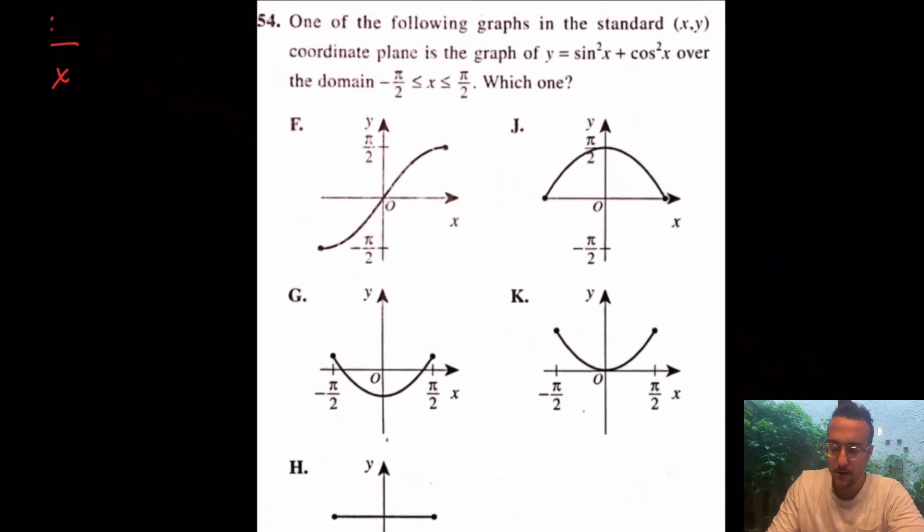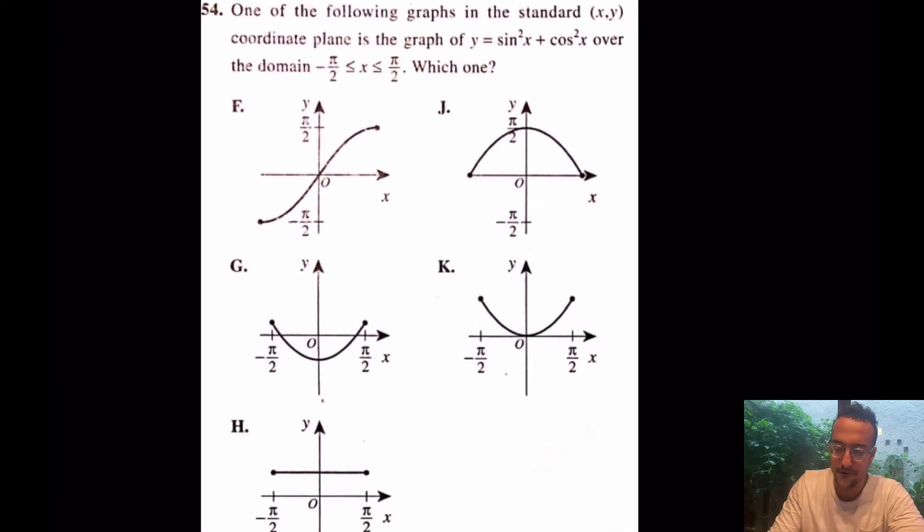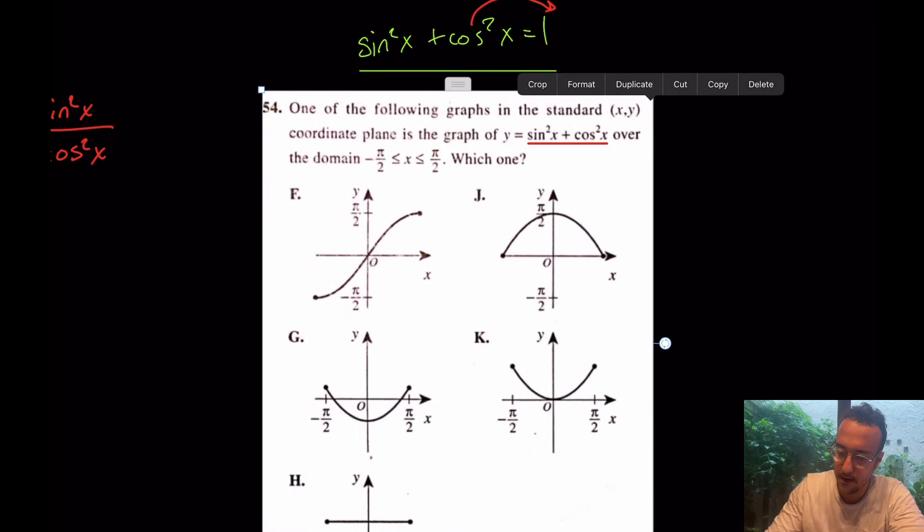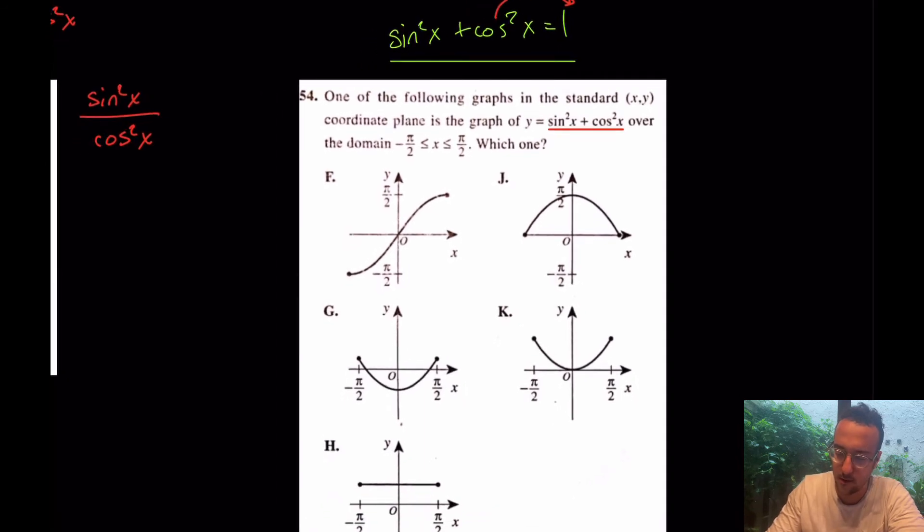Let's move along now. Come over here for number 54, and this is such a hard question. For most people, but not for us. Take a look. What are they asking for? Sine squared plus cosine squared? Wait a second. We know our handy-dandy formula. Let me steal it again. Where was it?